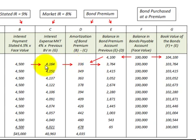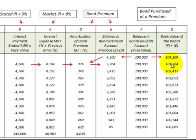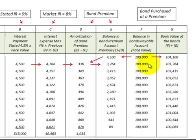The amortization of the bond premium is the difference between the regular interest payment and the interest expense recognized for the period — in this case $336. We then subtract that amortization amount from the beginning premium balance to get the new premium balance, and we also subtract it from the book value of the bond, which reduces the book value by that amortization amount.